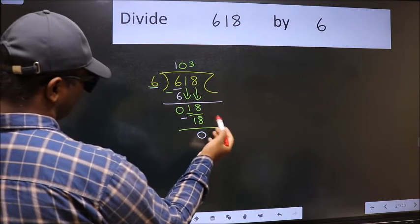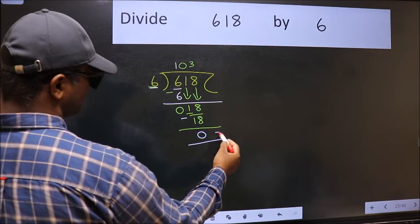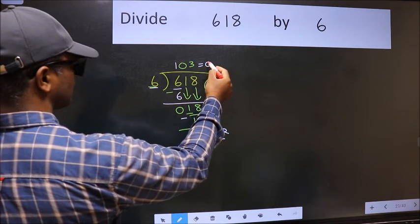No more numbers to bring it down, so we stop here. This is our remainder and this is our quotient.